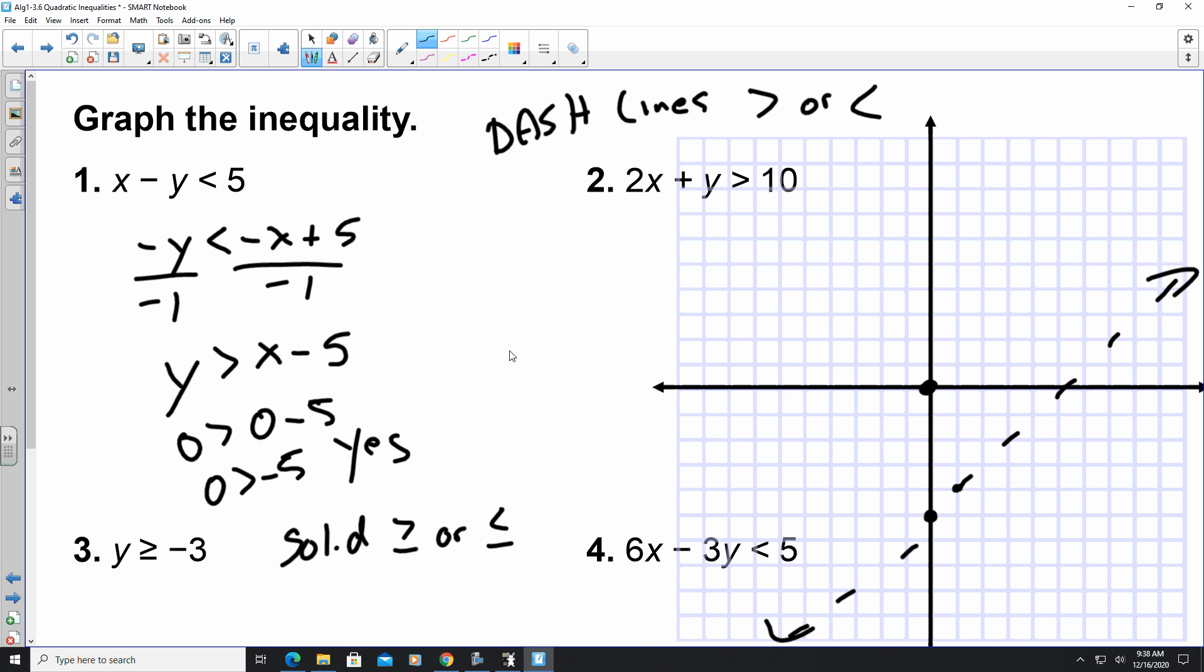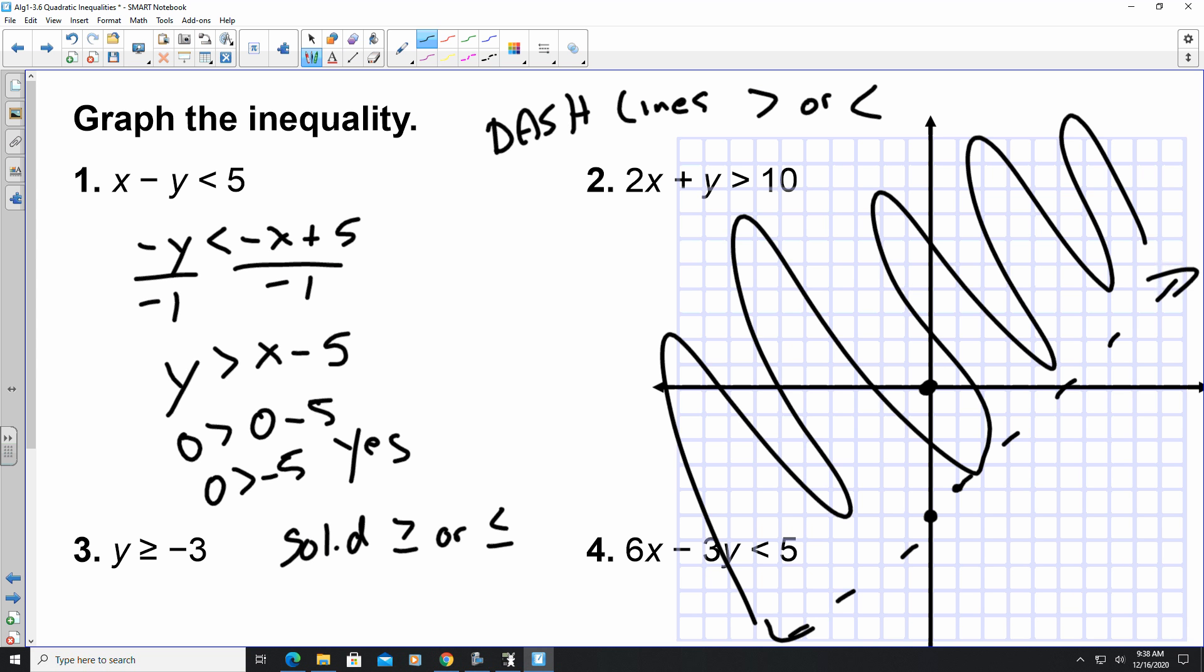So since I can say yes, my shading goes with the test point. If it said no, it would go away from the test point, just like we've used in other inequality problems that we've looked at in the past.